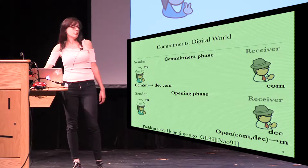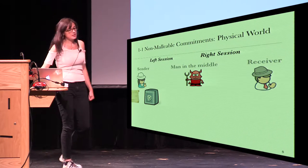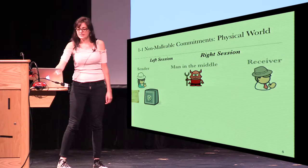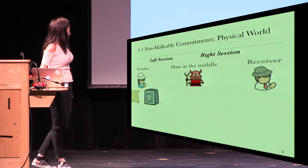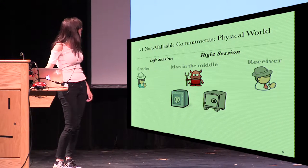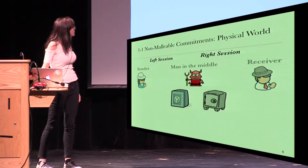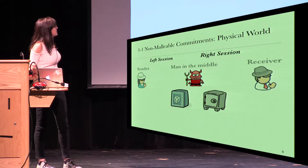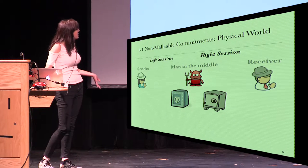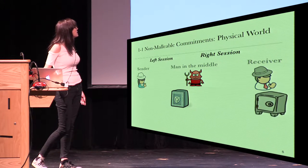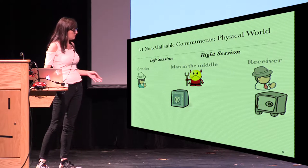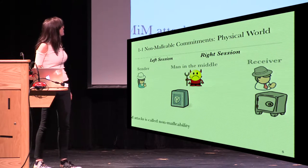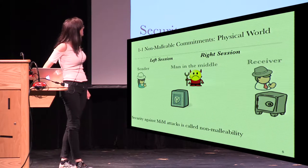This problem was solved a long time ago. We now talk about a more interesting game where there is an adversary party called the man in the middle, who plays as a sender with the receiver and as a receiver with the sender. The sender puts the message inside the safe and sends the safe to the man in the middle. The man in the middle can forward the same safe, but the commitment is not valid because the safe is related to a specific sender. So the only thing he can do is get a new message and put it in a new safe. In this case, he loses the game because the goal of the man in the middle is to commit to a message related to what he gets from the sender. A commitment scheme that is secure against any man in the middle is called non-malleable.